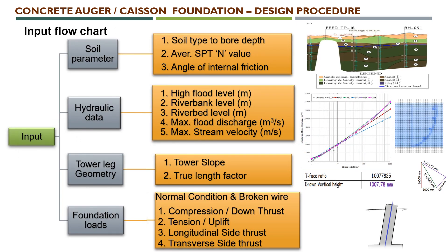These are the input records for the design of auger or caisson foundation for a transmission line tower. The first input category is soil parameters. We need information such as soil type to bore depth, and according to that bore depth, what soils are encountered — obtained from the geotechnical investigation report. Below the river beds, average SPT or N value and angle of internal friction information are the three major items we need from the soil parameter report.